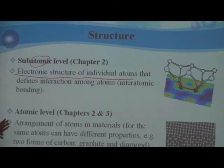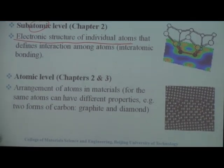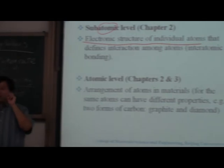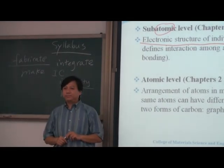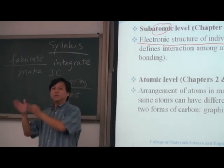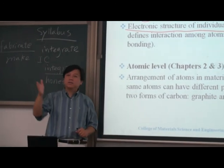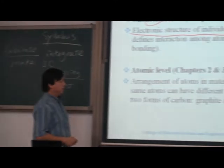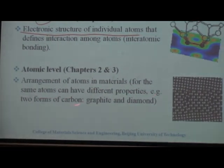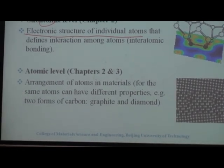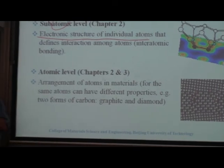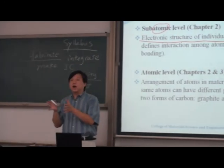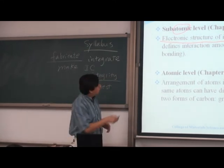After subatomic level, we look at the atomic level, which is bigger than subatomic. Atomic level deals with how atoms are aligned in three-dimensional space — the arrangement of atoms or ions in materials. For example, the same carbon atoms arranged differently give you graphite or diamond with very different properties. So at the atomic level, we study the crystal structure of materials, and different materials have different structures because their atoms are differently arranged.